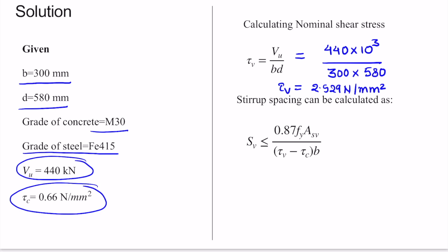After getting the value of τ_v, we will put this value in the formula of stirrup spacing and we will get the value of spacing. Stirrup spacing should be S_v ≤ 0.87 f_y A_sv / [(τ_v - τ_c)b].